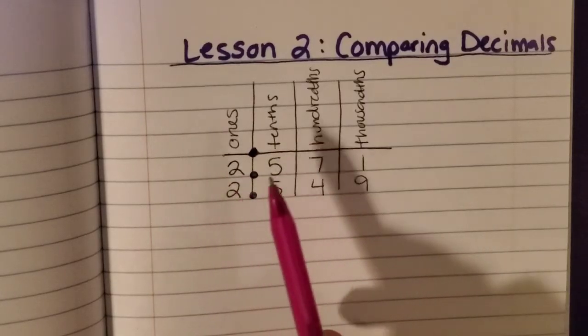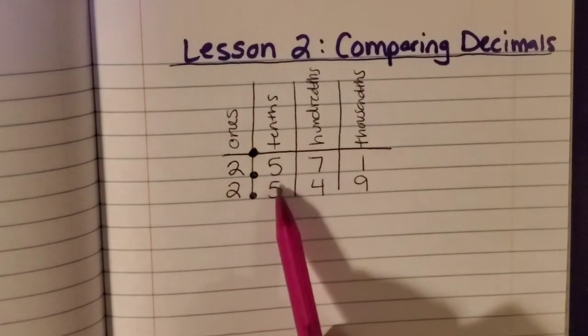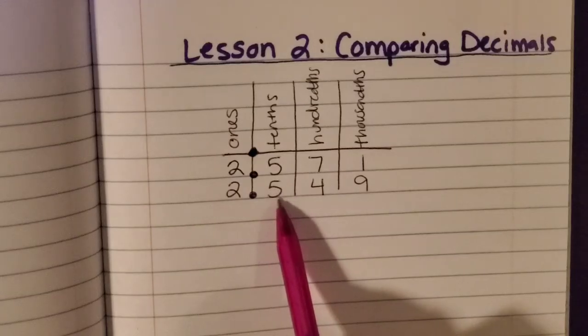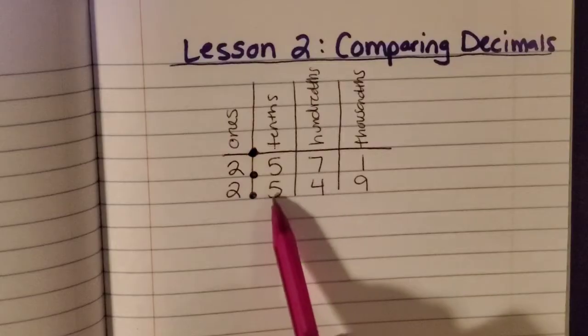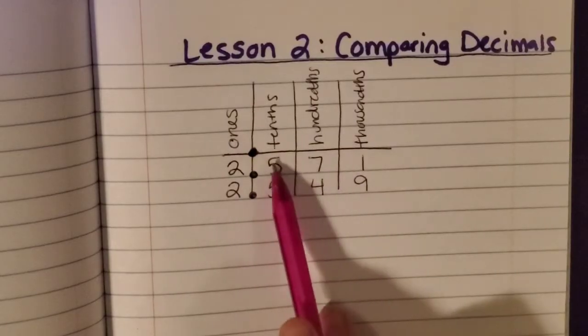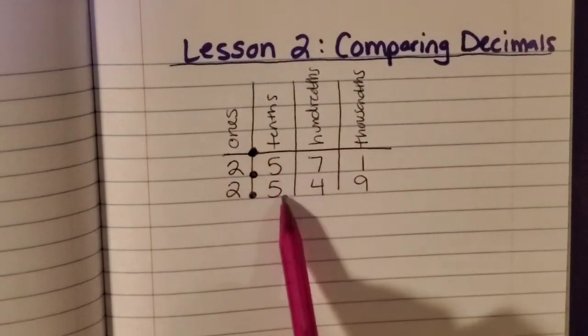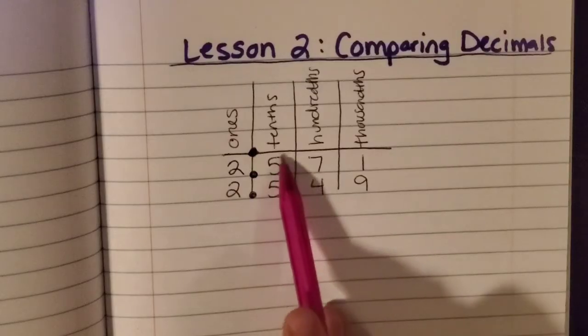So let's move over. I always move over to my next place value to the right. So now tenths are what we should compare, and they're the same again, five and five. So then I just keep moving over.